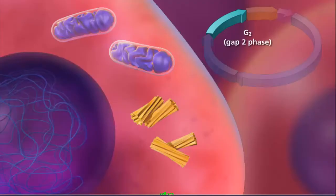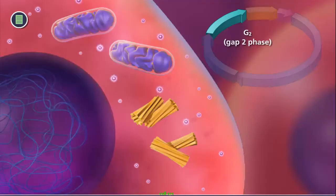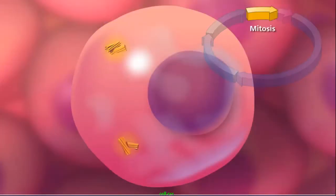Finally, during G2 or GAP2 phase, all the enzymes needed to aid in the process of cell division are produced. Most eukaryotic cells spend a great deal of time in interphase, and a very short period of time actually dividing, a process called mitosis.